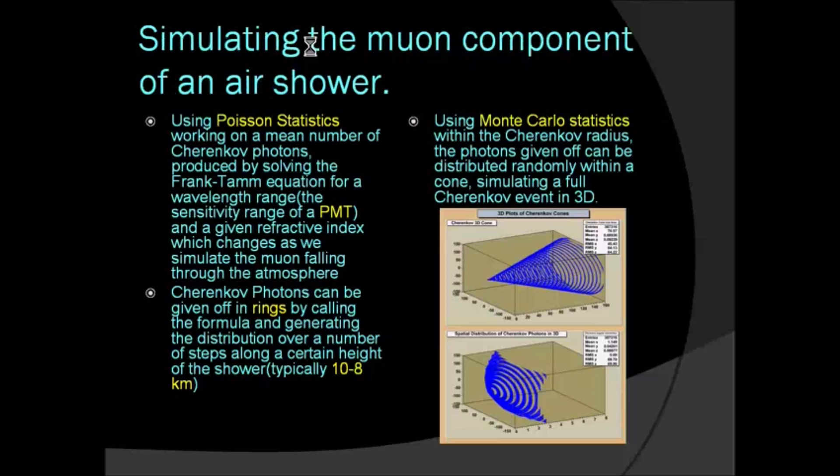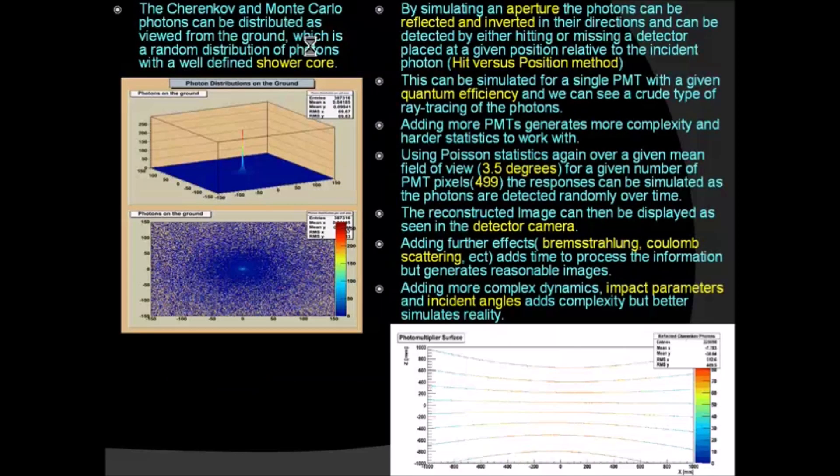I've been able to simulate Cherenkov cones given off by a muon moving through the atmosphere at about 10 kilometers, using various statistics from nuclear physics and particle physics. The Cherenkov rings given off are statistical numbers based on the Frank-Tamm formula that I've shown beforehand. With this, you can basically distribute photons on the ground and as seen in the detector aperture, which has a given mean field of view and a given number of pixels.